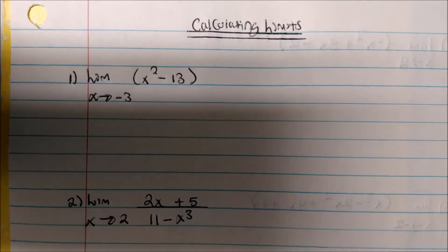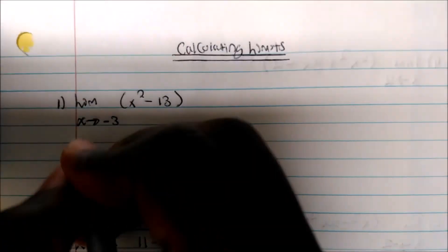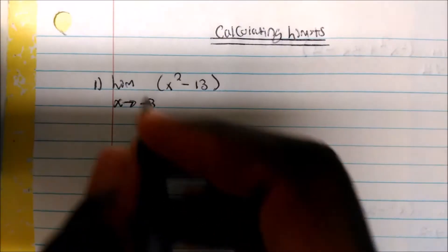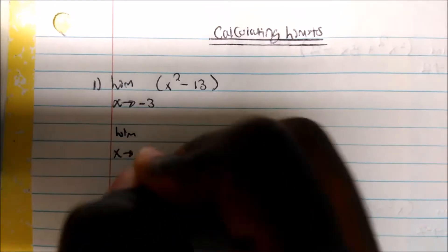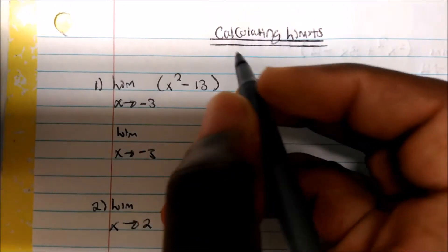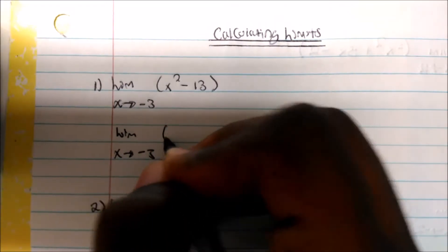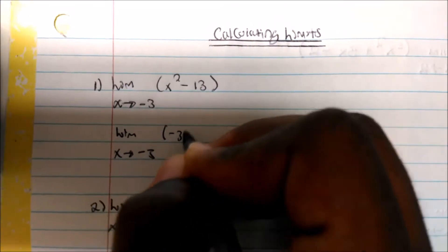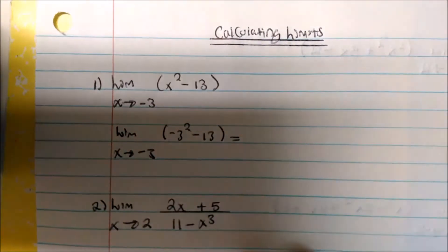For a problem like this, we could plug this in. We could just plug in the value to see what we get. So the limit as x approaches negative 3 is going to be negative 3 squared minus 13.